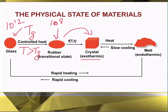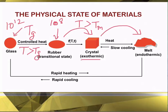The crystal has its own melting point, denoted Tm. When we heat the crystal and the temperature rises above Tm, the crystal starts to melt, forming a liquid melt. This melting process is endothermic because we must supply heat to raise the temperature above the melting point. We can also reverse this: applying a slow cooling rate allows the melt to transform back into a crystalline state.